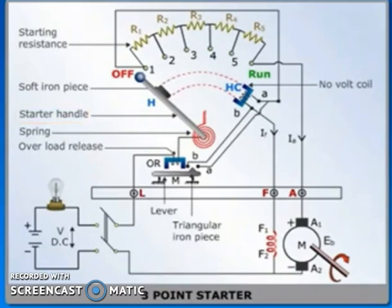Case two: motor starting. As highlighted on the screen, the starting resistance is connected between contact studs one, two, three, four, five. For starting the motor, the handle is rotated to come in contact with stud one.